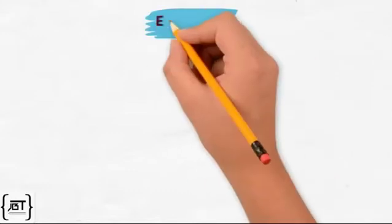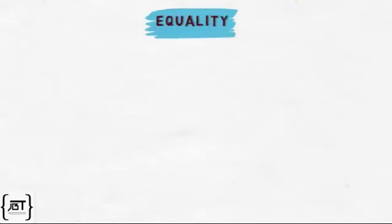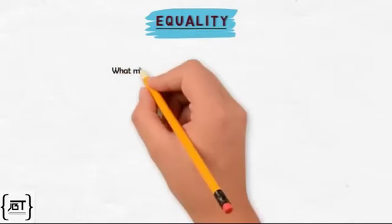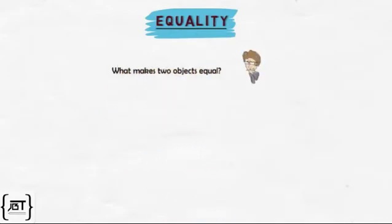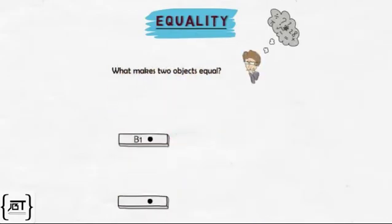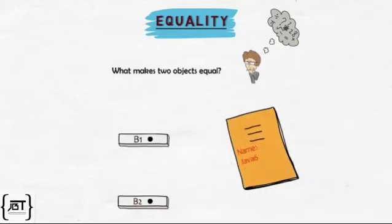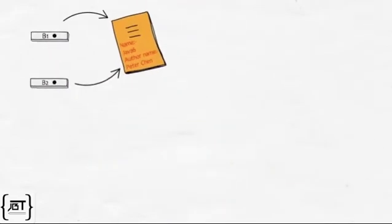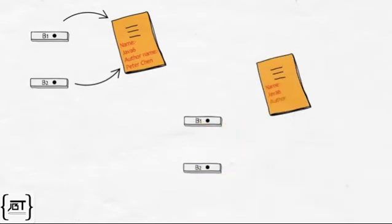In this video, we will learn about the concept of equality of objects. What makes two objects equal? Is it two references to the very same object, or is it two separate objects that both have the same values?